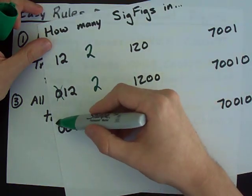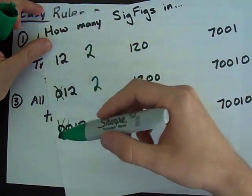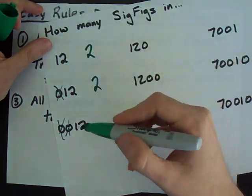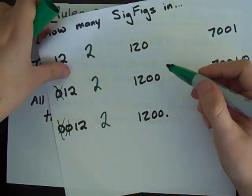Oh, look! That zero and that zero both don't count because they're leading zeros. This one also has two significant figures.